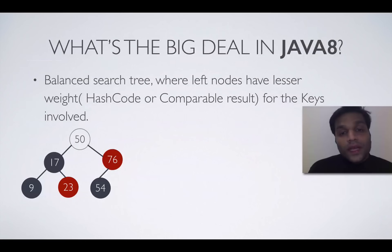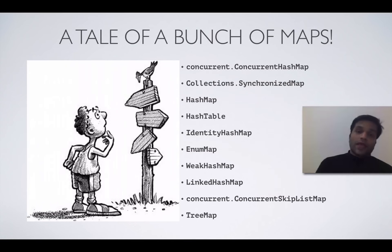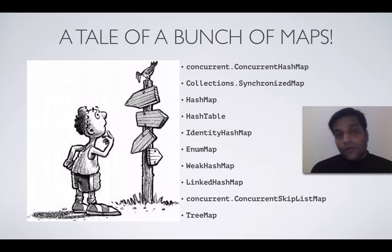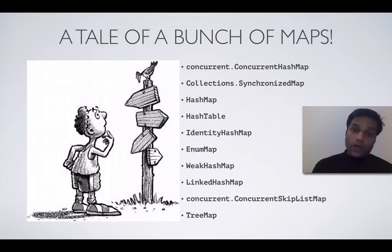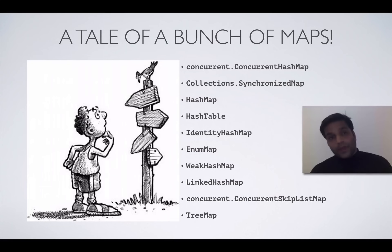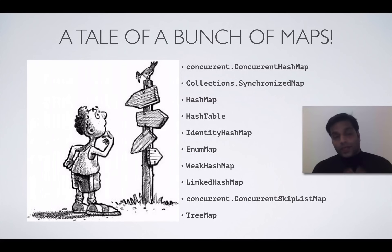In our next session, we will see the various kinds of maps in Java and when to use each. To summarize today's session: we covered what a Map is, the importance of the equals-and-hashCode contract, what hash code collisions are — when two unequal objects produce the same hash code — and how collisions are managed using a linked list or a balanced tree in Java 8. Please stay tuned for upcoming videos. Thank you.